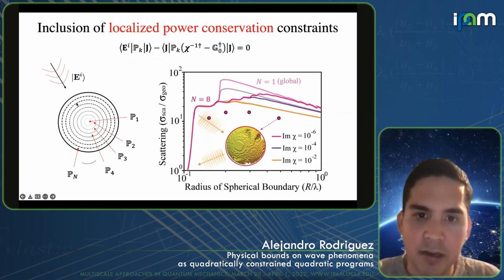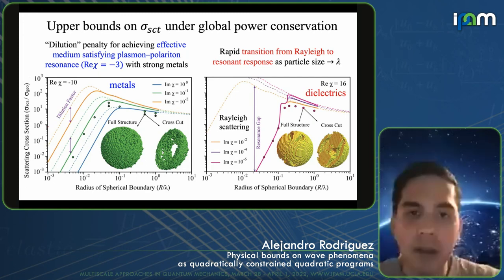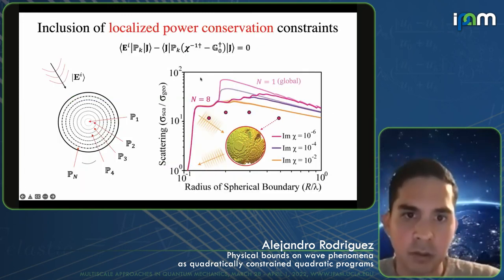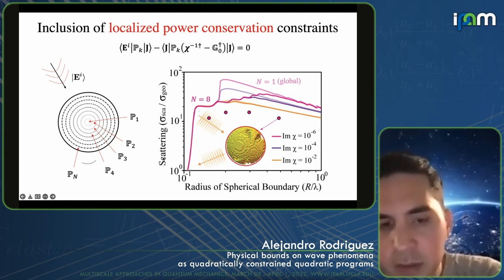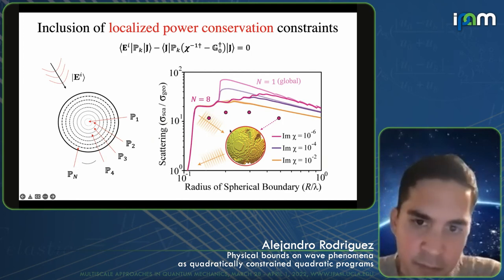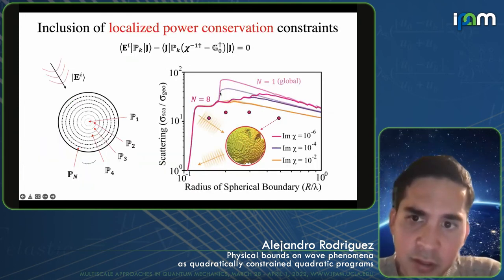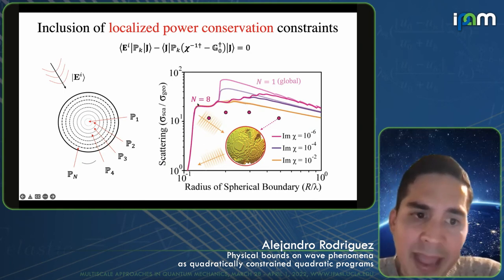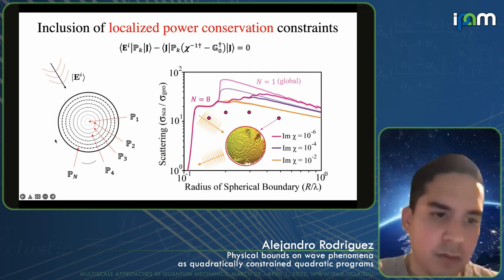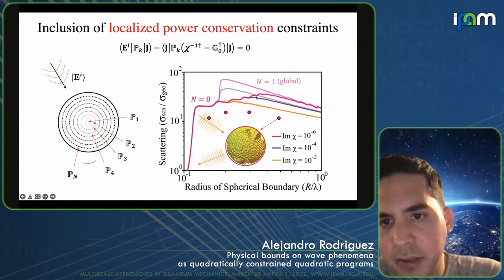What happens if instead of global power conservation you start enforcing energy conservation at smaller and smaller scales — localized power conservation constraints? You have not two but potentially hundreds or thousands of constraints, which gets more expensive. Focusing on the transition between sub-wavelength and wavelength scale for the dielectric, you can see the global power conservation constraints in lighter colors, and once you impose eight concentric shells as sub-regions where you enforce the integral relations, the limits are getting tighter.